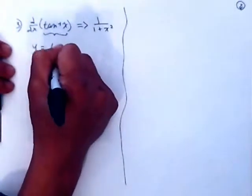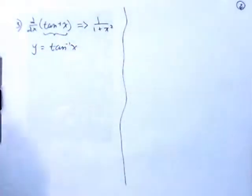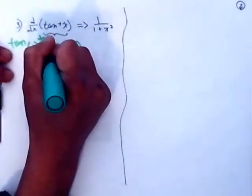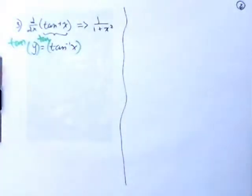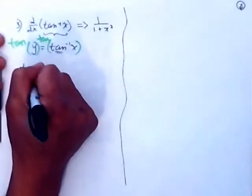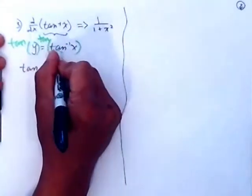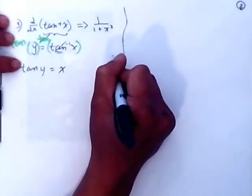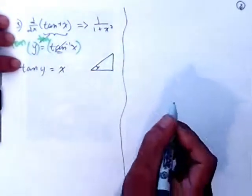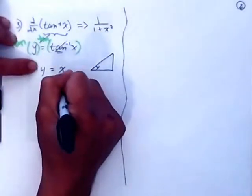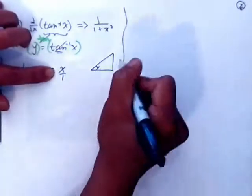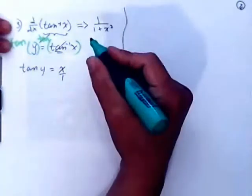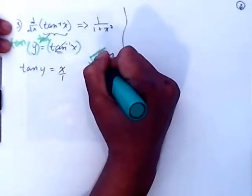First, y equals the tangent inverse of x. Next, we take the tangent of both sides because of this tangent function. Tangent of y equals tangent of the tangent inverse — these are inverse functions, so you end up with just x. At this stage we draw the triangle again. Tangent is opposite over adjacent, so put x over 1. Using the Pythagorean theorem, the hypotenuse is going to be the square root of 1 plus x squared.